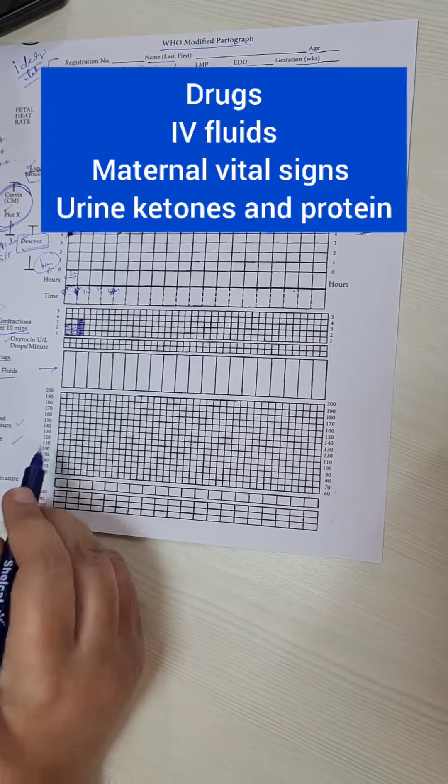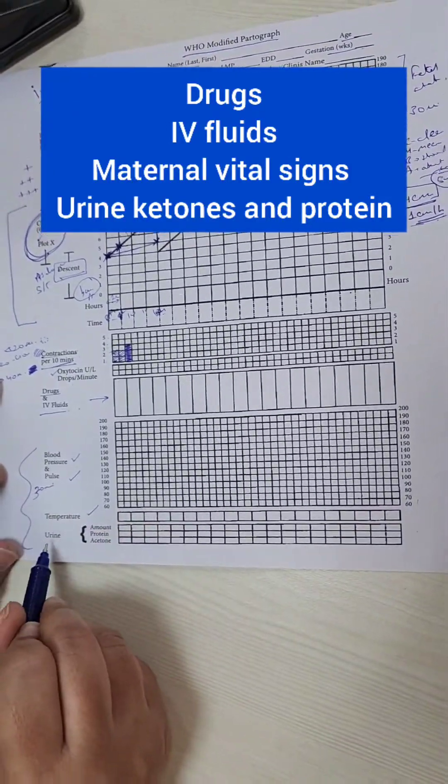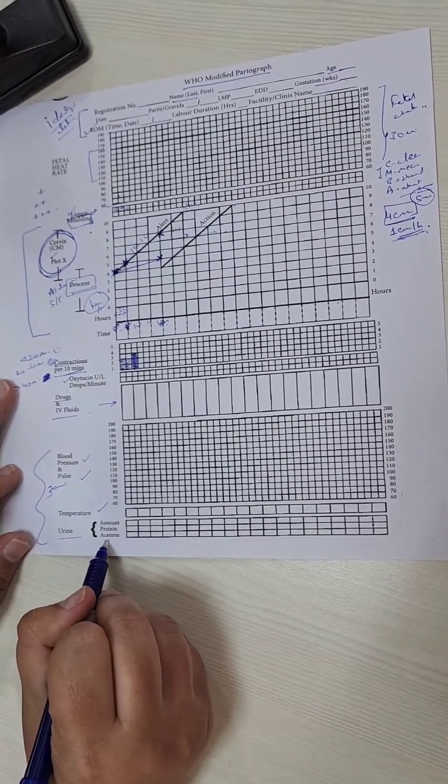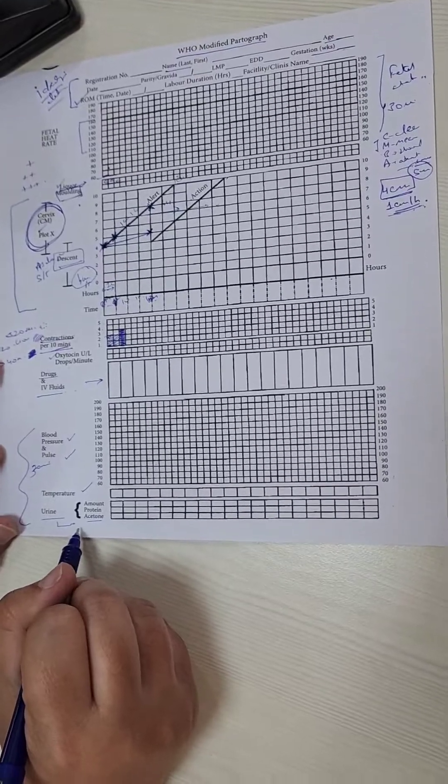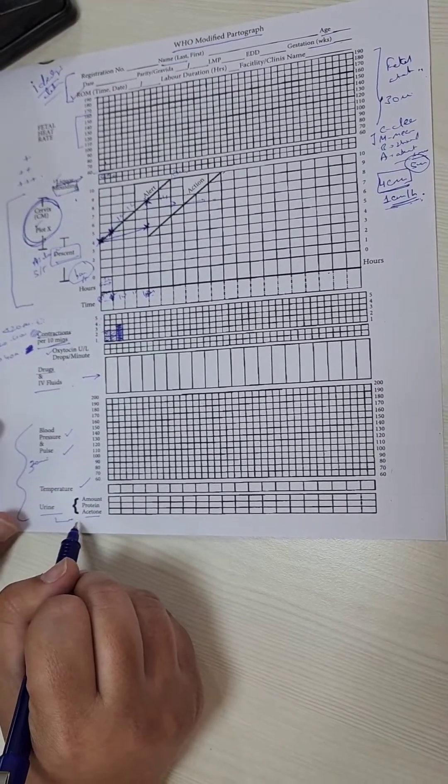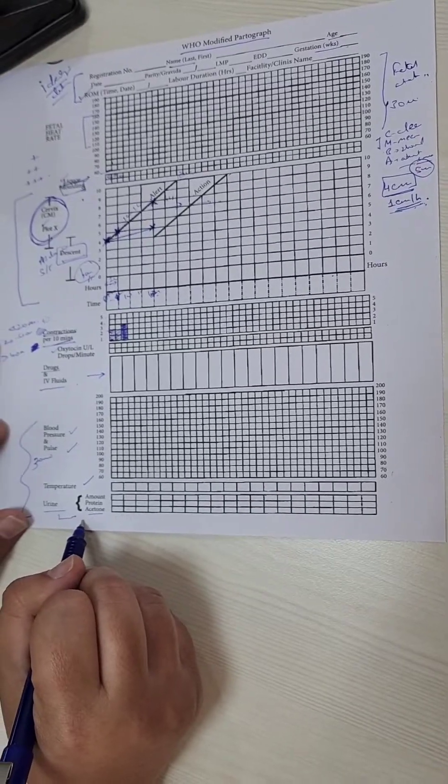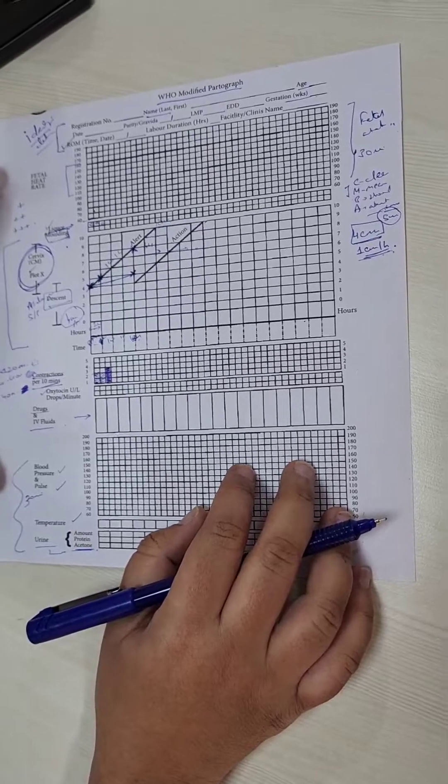And these are the maternal parameters, her blood pressure, her pulse, her temperature, which are to be checked every 30 minutes. And urine albumin and ketones have to be checked, especially in women who are pre-eclamptic and also women who are in prolonged labor or who may go into obstructed labor to check for dehydration. That is why we do ketones. So this is the partograph in brief.